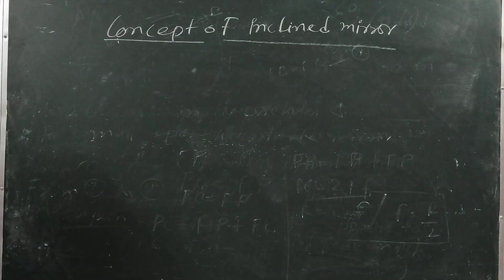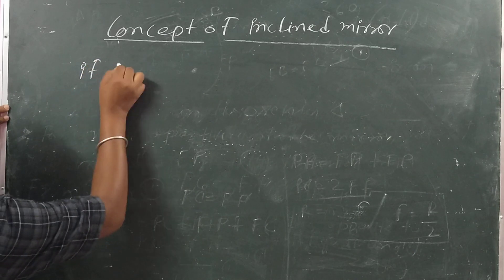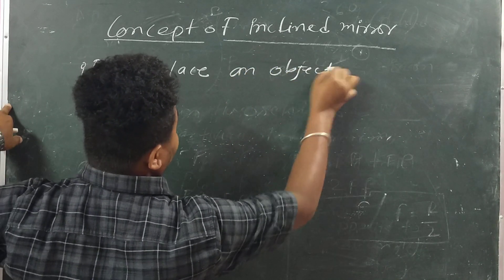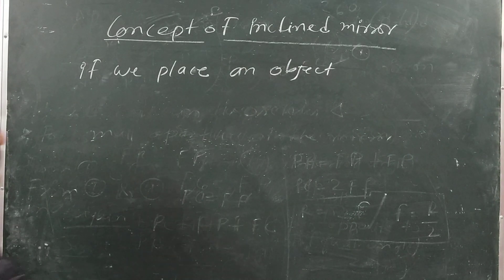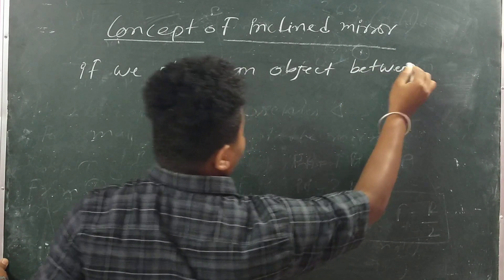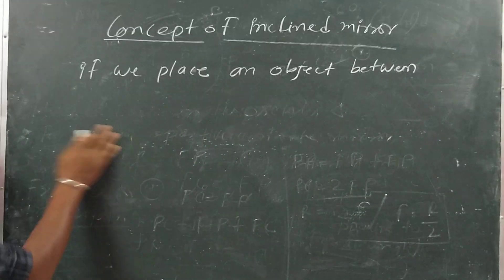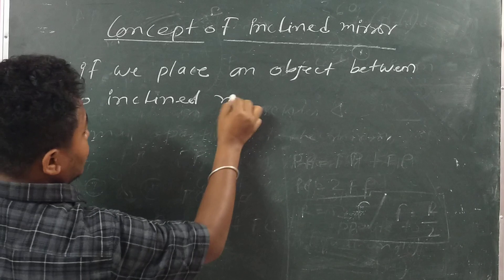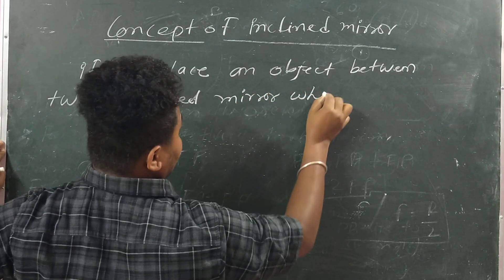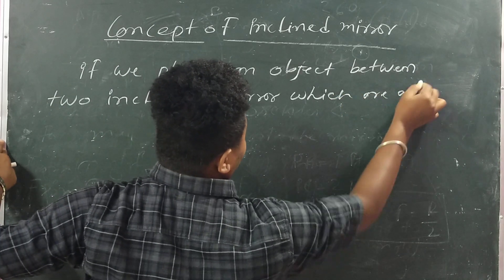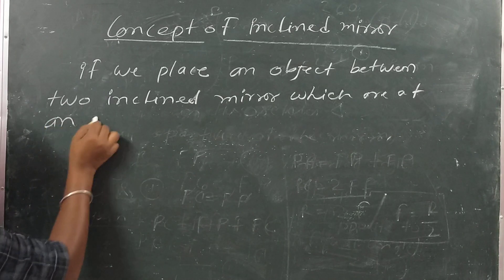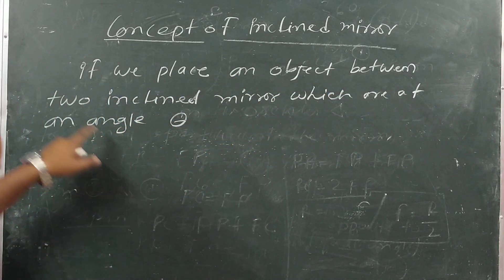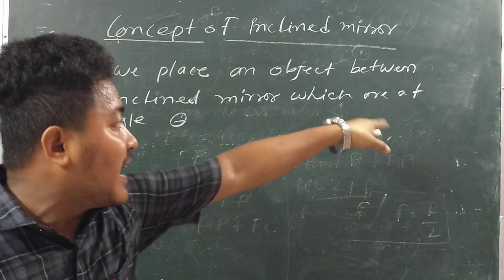Let's talk about the concept of inclined mirrors. If we place an object between two inclined mirrors which are at an angle theta, we need to find out how many images are formed.